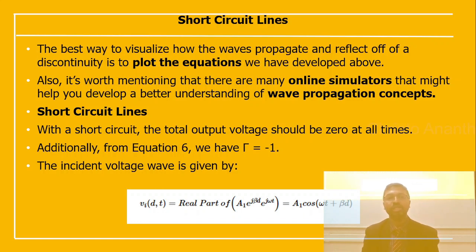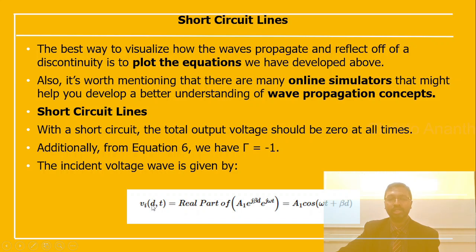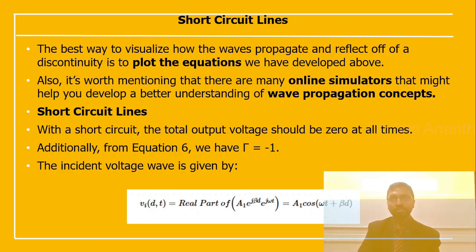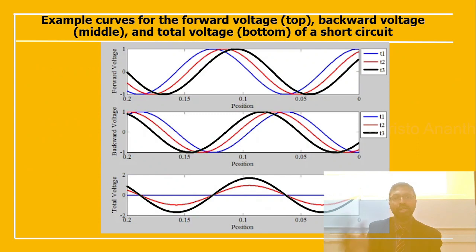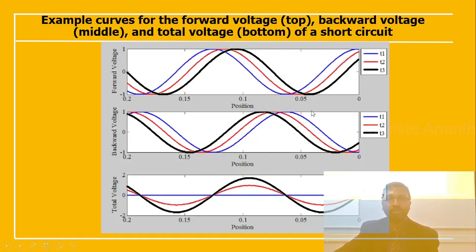For a short circuit line, the total output voltage must be 0 at all times. From equation 6, the reflection coefficient equals −1. The incident voltage wave is VI(d,t) = Re[A₁·e^(jβd)·e^(jωt)] = A₁·cos(ωt + βd). Example curves show the forward voltage, backward voltage, and total voltage for three different times T1, T2, and T3.